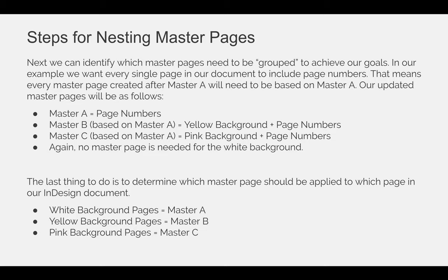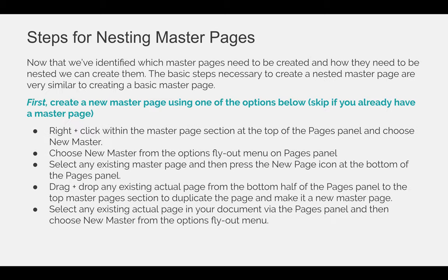There's no additional Master Page needed for the white background. The last thing to do is to determine which Master Pages should be applied to which pages in your document. Any white pages will be linked to Master A, any pages that should have a yellow background will be linked to Master B, and any pages that should have a pink background will be linked to Master C. Now that we've identified which Master Pages need to be created and how they need to be nested, we can create them.